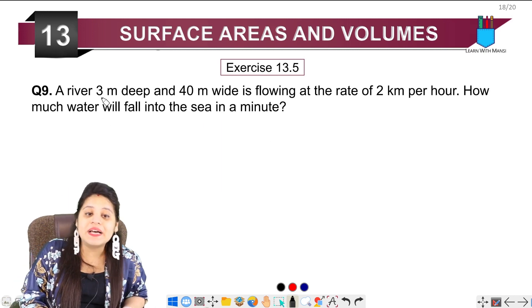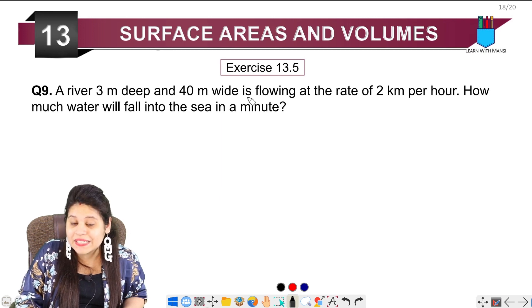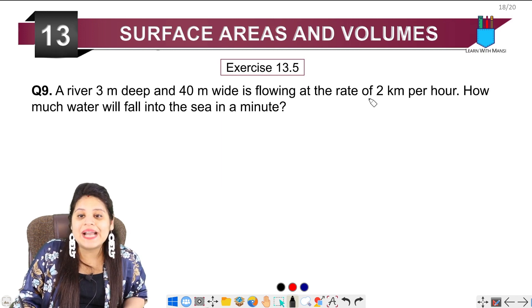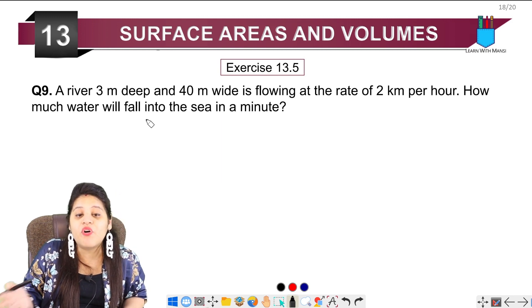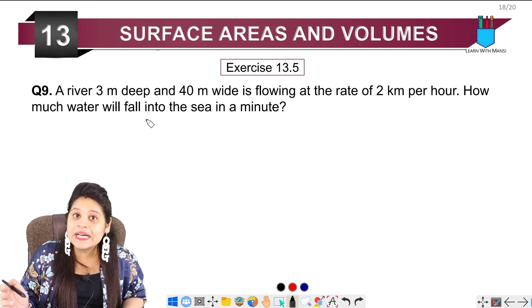The question says, a river 3 meter deep and 40 meter wide is flowing at the rate of 2 km per hour. How much water will fall into the sea in a minute?